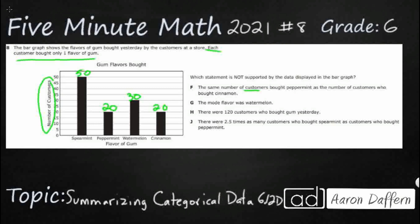What we need to do is we need to find the statement that is not supported by the data. So three of these are going to be correct. We're looking for the one that is incorrect.